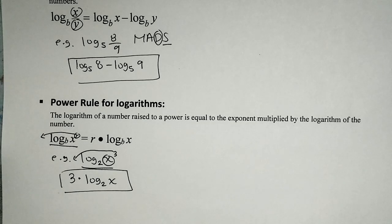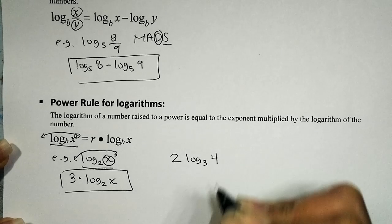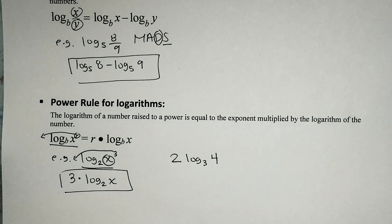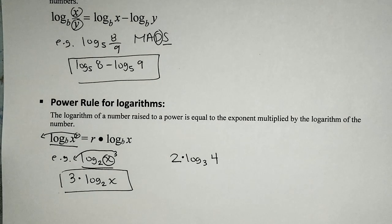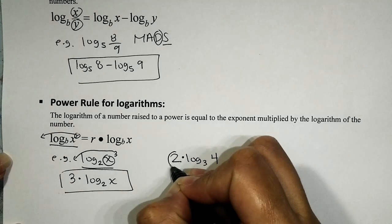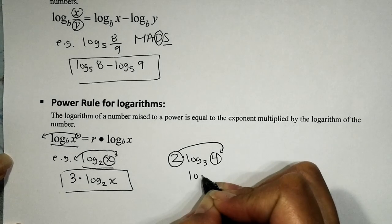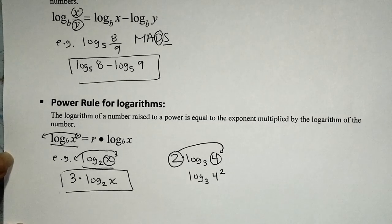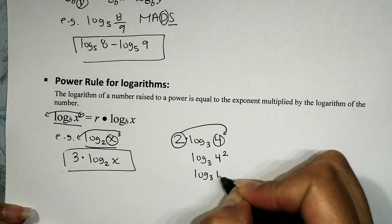What if we're given a logarithm expression and asked to write it as a single logarithm? For example, 2 times logarithm base 3 of 4. Using the power rule in reverse, whatever we're multiplying the logarithm by becomes the exponent of the argument. So this gives us logarithm base 3 of 4², and since 4² is 16, we get logarithm base 3 of 16.